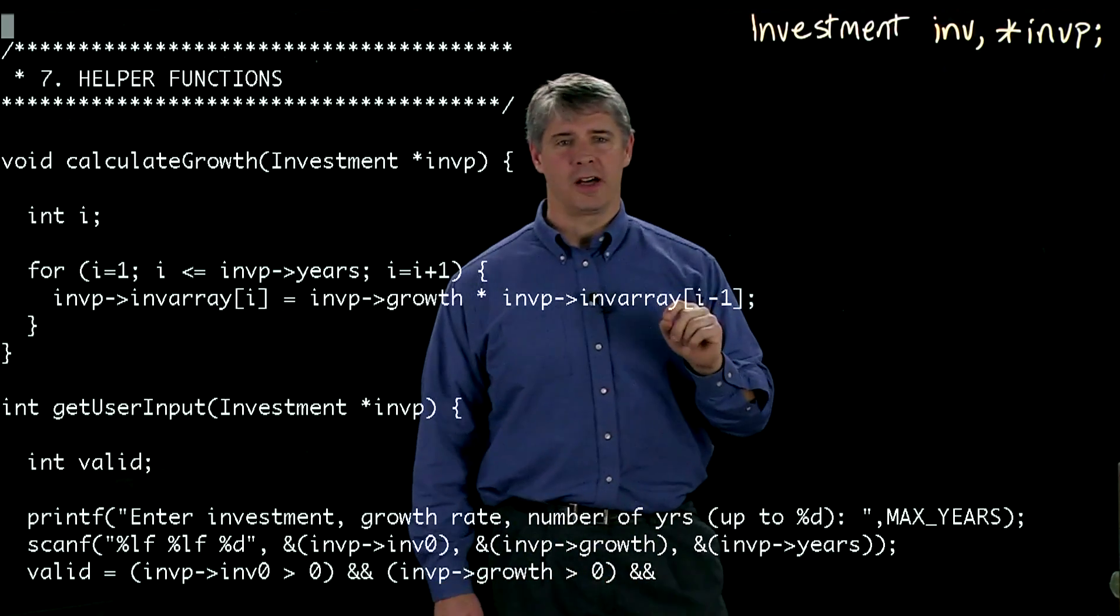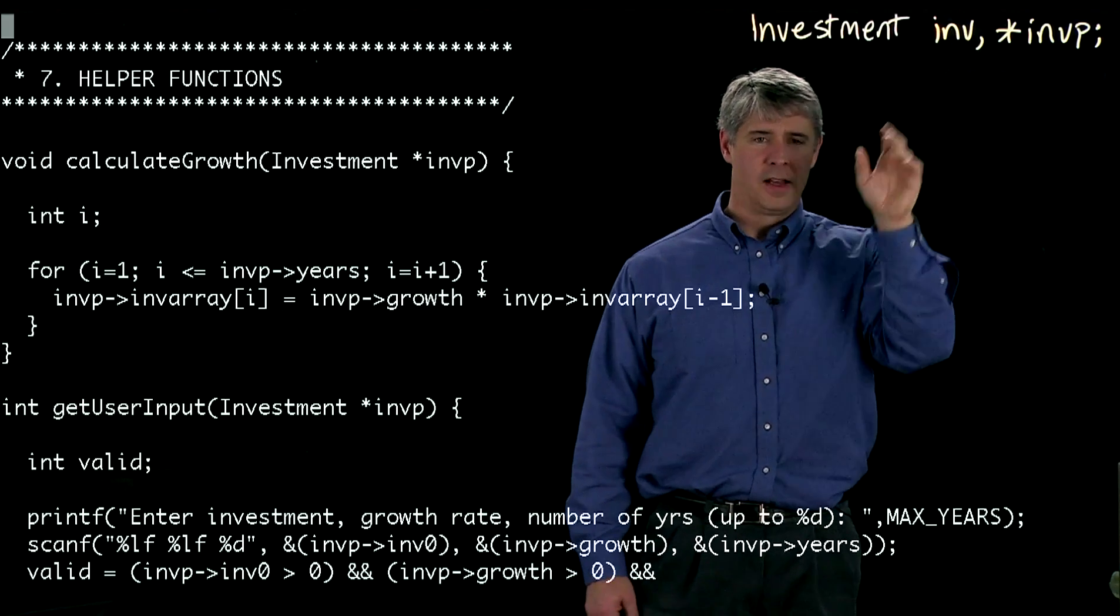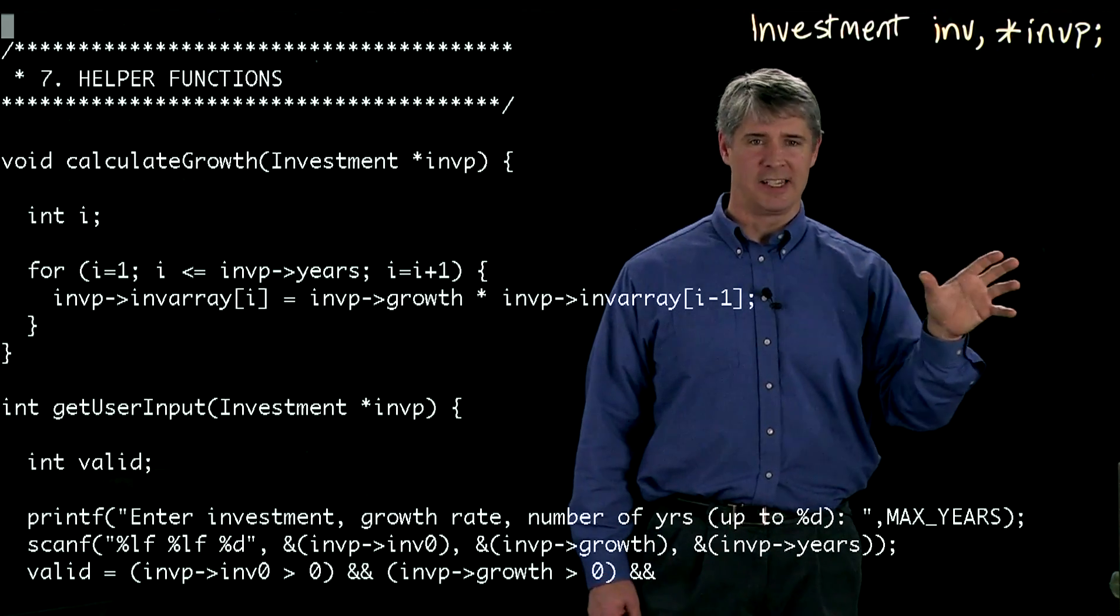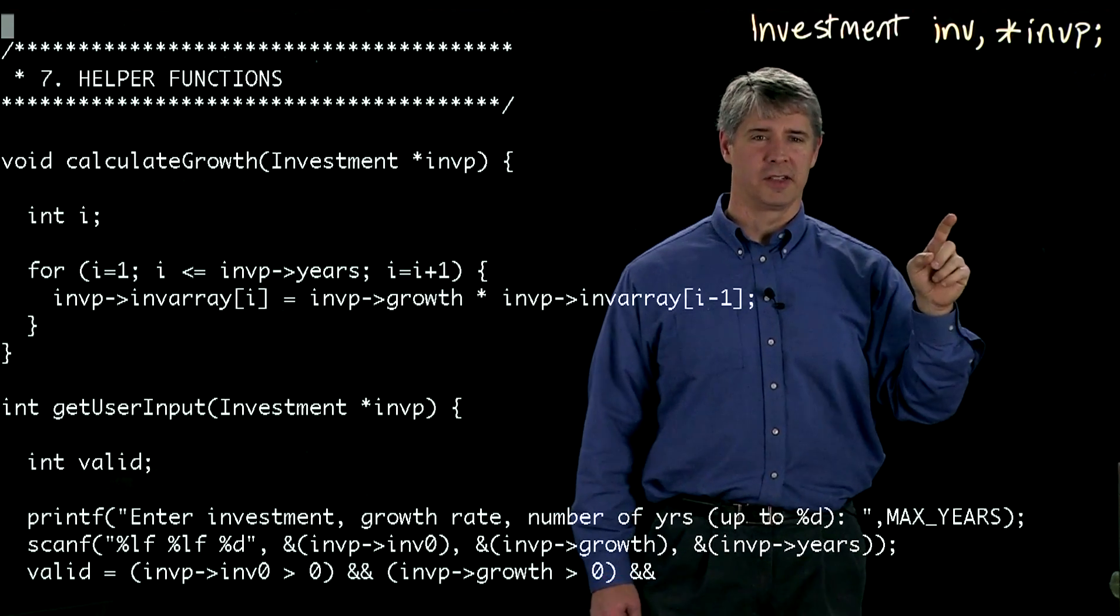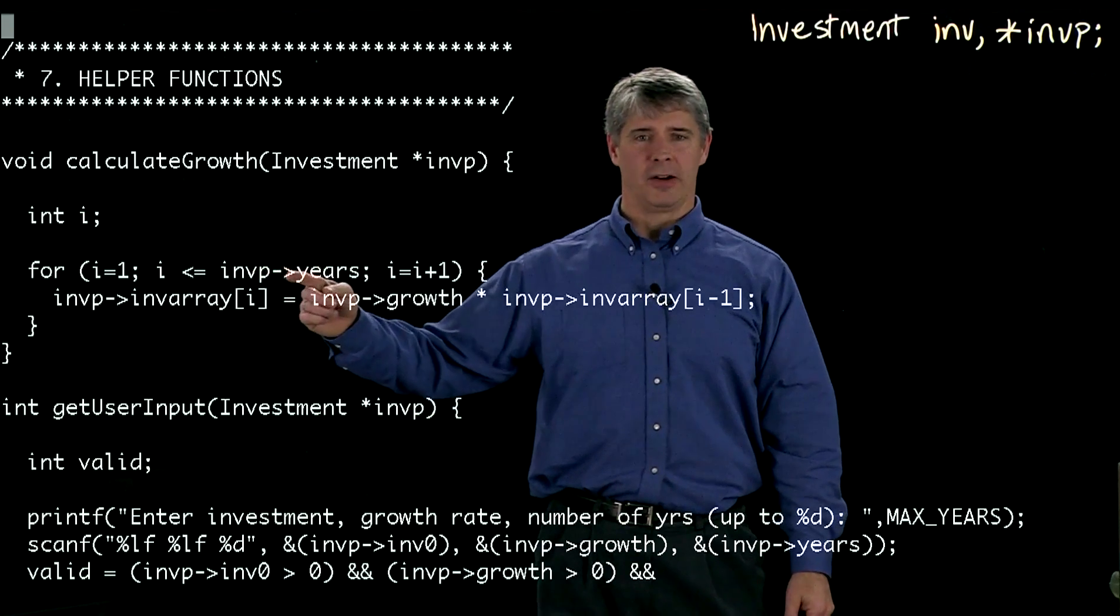So earlier we saw that if we have the structure itself, inv, then we access its elements by using the dot, inv dot years. But since we have a pointer instead of the structure itself, we access using this arrow notation, a line and a greater than sign.